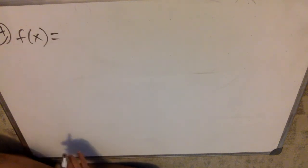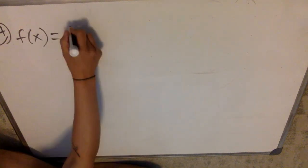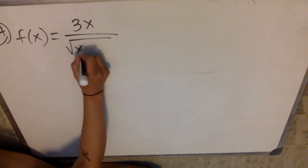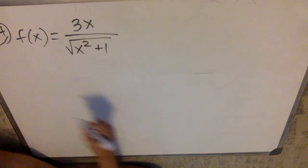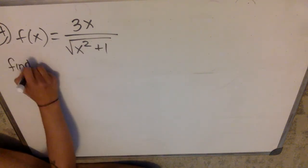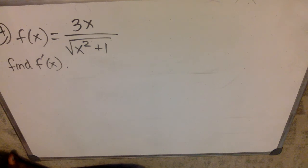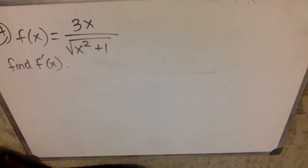I'm going to give you f(x) equals 3x over the square root of x²+1. Let's find f prime of x. This is mostly so you get used to what to do if you've got a root in the denominator. There are a couple of options. The Khan Academy approach is to flip that root to the top as a negative one-half exponent and do the product rule — I'm not a fan of that. I'm going to do the quotient rule.